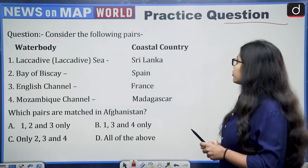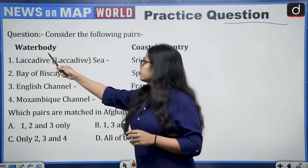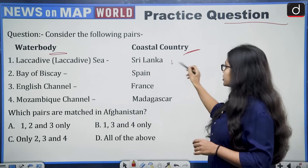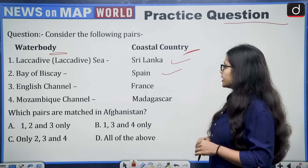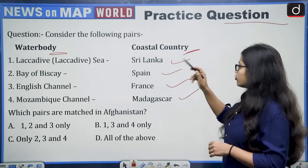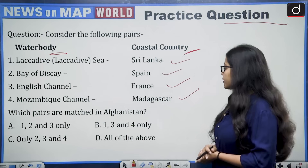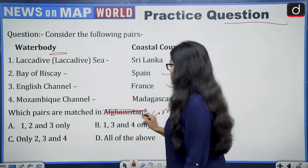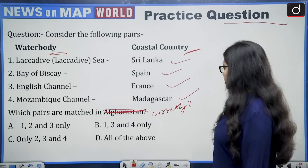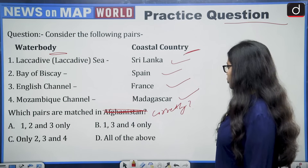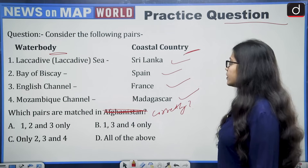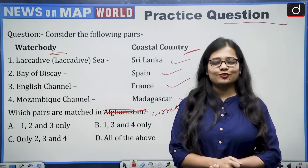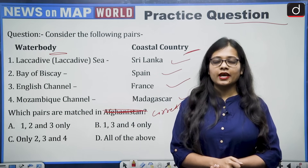Now for the practice question — tell me the answer in the comment section. Consider the following pairs of water bodies and coastal countries: Lakshadweep Sea — Sri Lanka; Bay of Biscay — Spain; English Channel — France; Mozambique Channel — Madagascar. How many of the pairs given above are correctly matched? Options are: only one, three and four only, two, three and four only, or all of the above. Try to look at the map and give me your answer in the comments. That's all for today — thank you so much for watching. Till we meet next time, keep reading and keep writing.